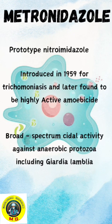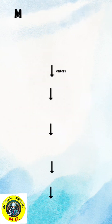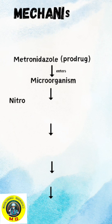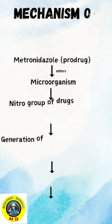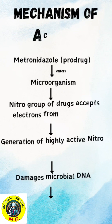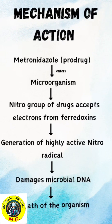It has broad spectrum activity against anaerobic protozoa including Giardia lamblia. Mechanism of action: metronidazole is a prodrug which enters into the microorganism. The nitro group of the drug accepts electrons from ferredoxins and generates highly active nitro radicals which damage microbial DNA, and ultimately death of the organism occurs.